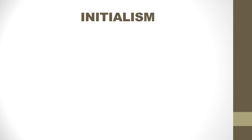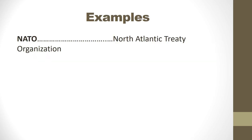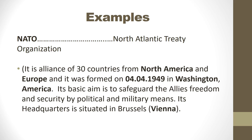On your slide, the next type of abbreviation is initialism. First of all, I talk about its definition. It is a type of abbreviation where the first letters of words in a phrase are used to make a term which may or may not be sounded or pronounced as a new word. The examples are here on your slide. The word is NATO, meant to be North Atlantic Treaty Organization. I would like to tell you some detail about that particular word NATO.